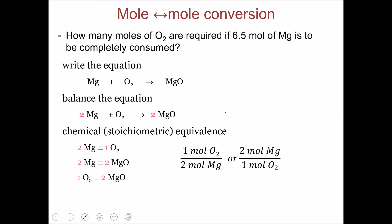Those coefficient ratios help in mole-to-mole conversions between chemicals in a given reaction. For example, to calculate the number of moles of oxygen needed to react with 6.5 moles of magnesium for a complete reaction, start by writing the equation and then balance it. The equation is balanced by placing a coefficient of two in front of magnesium and two in front of magnesium oxide, giving three types of ratios: magnesium to oxygen, magnesium to magnesium oxide, and oxygen to magnesium oxide.